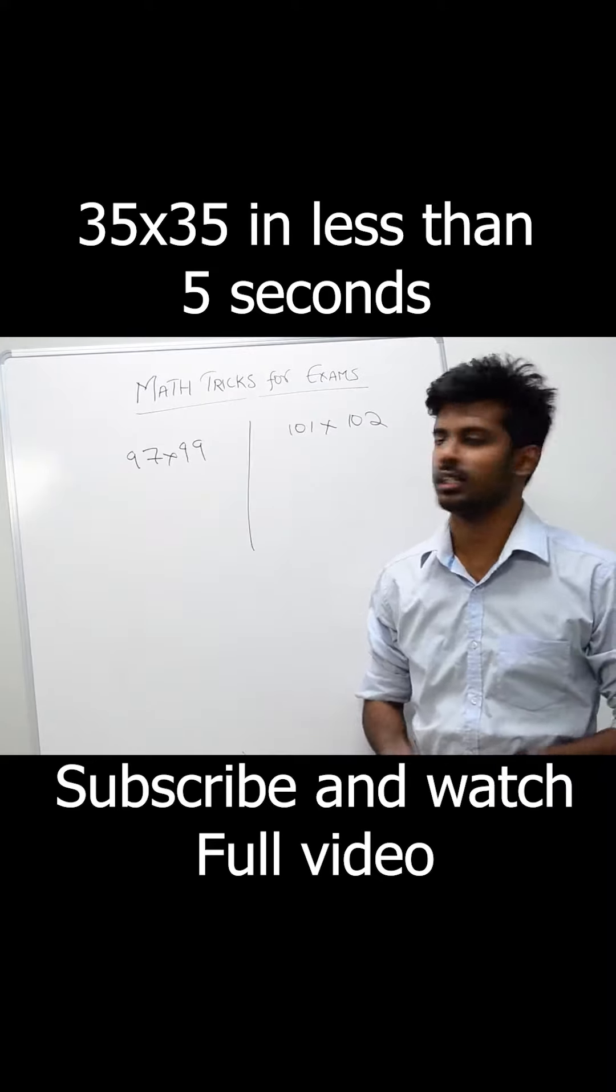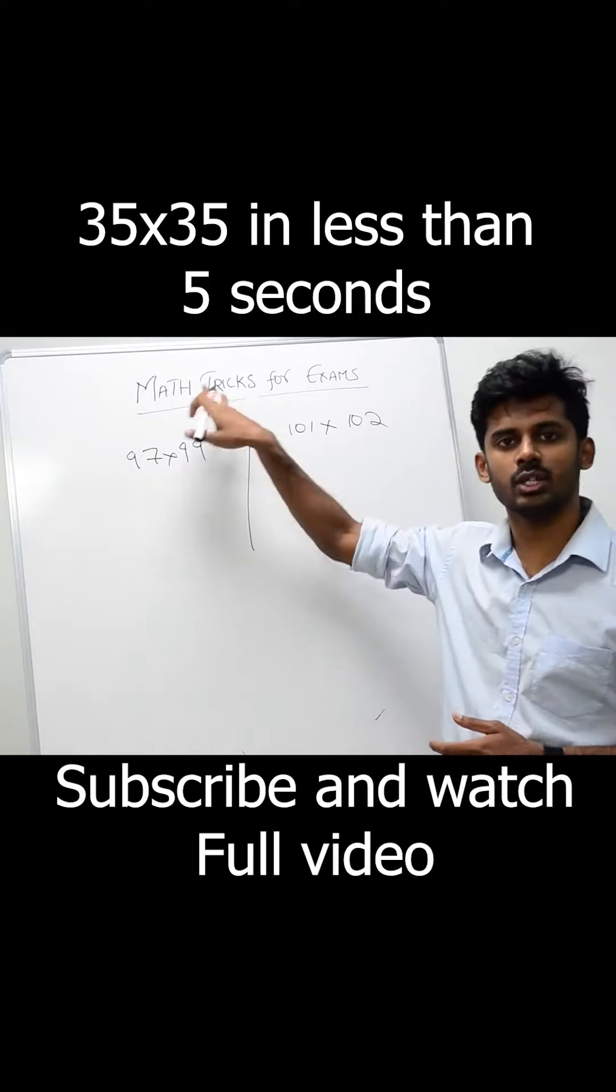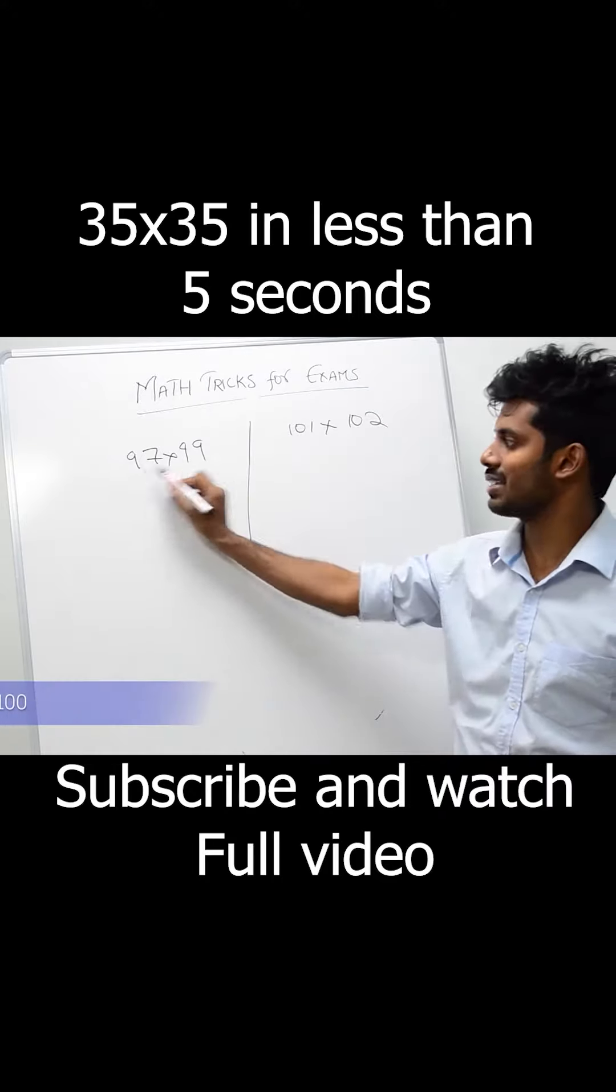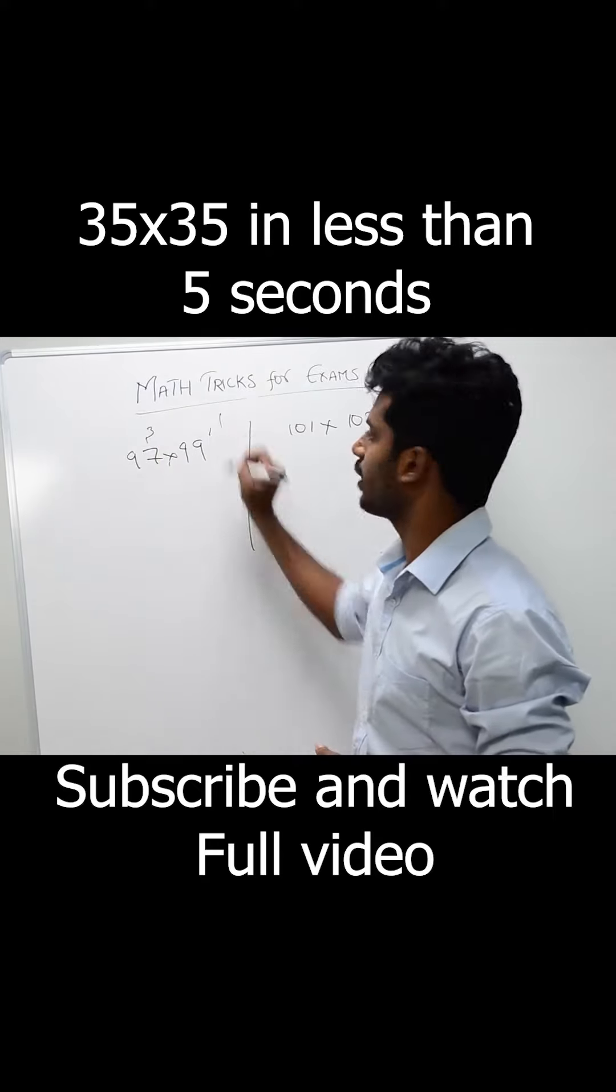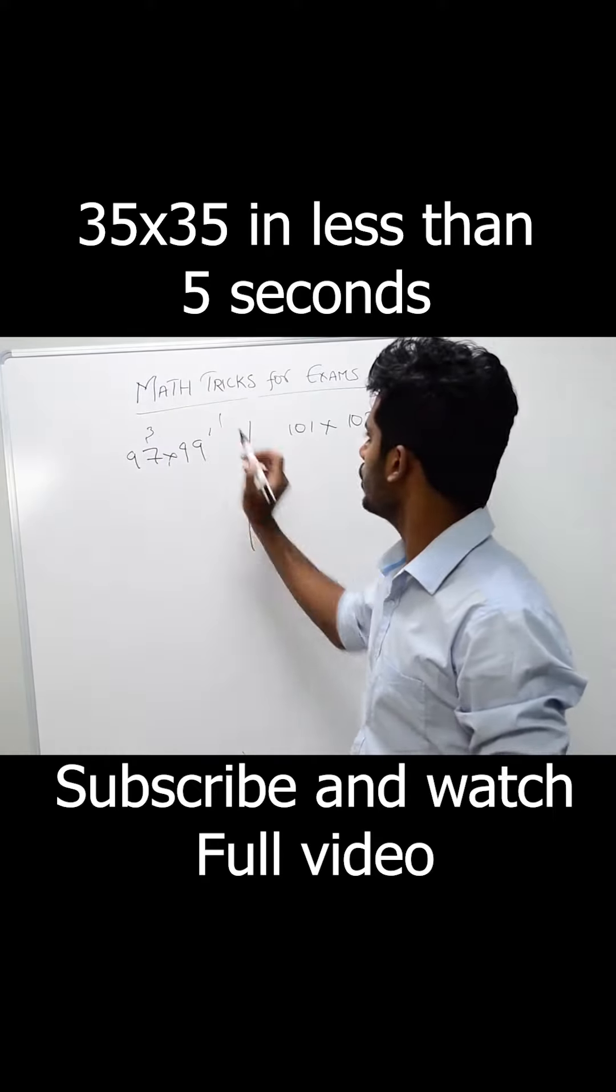Let's see a multiplication trick with numbers which are near to 100. First, suppose 97 and 99 are very near to 100. How much near? This is 3 and this is 1. So 3 times 1 equals 3.